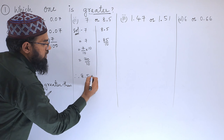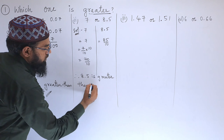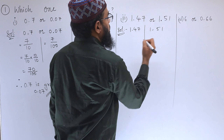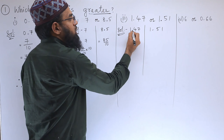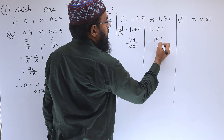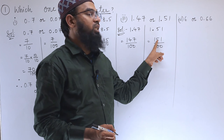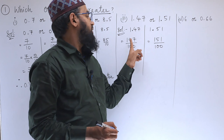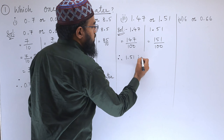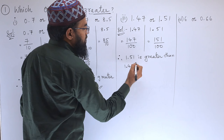Therefore 8.5 is greater than 7. Next, what is given is 1.47 and 1.51. As you can see there are two digits after decimal, so we can write 147 by 100 and 151 by 100. The denominators are the same, and 151 is greater than 147, so therefore 1.51 is greater than 1.47.